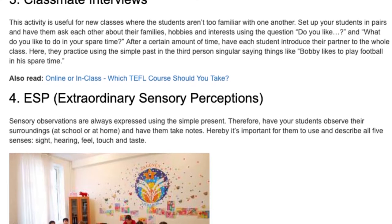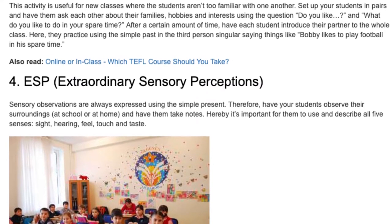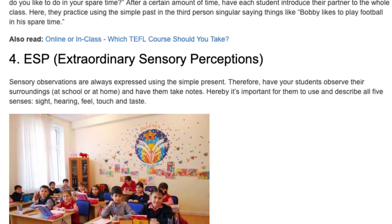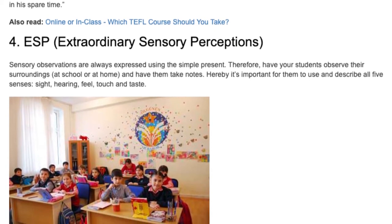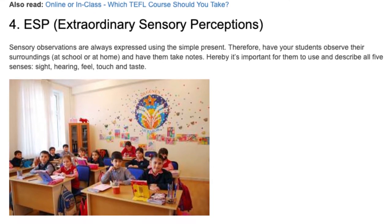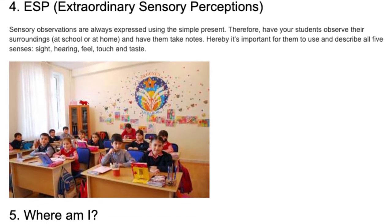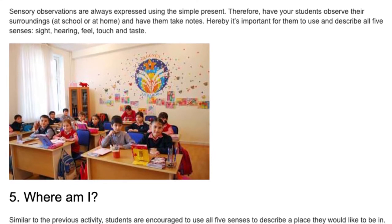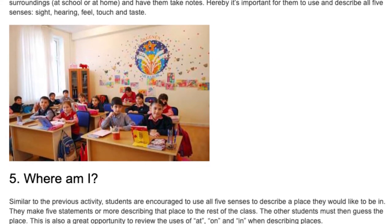4. Extraordinary Sensory Perceptions (ESP). Sensory observations are always expressed using the simple present. Have students observe their surroundings — at school or at home — and take notes. It's important for them to use and describe all five senses: sight, hearing, feel, touch, and taste.